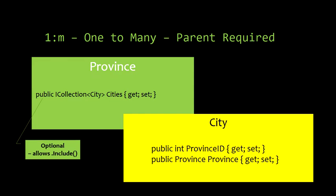That allows us, optionally, to do a .Include. So when we do a LINQ query to pull out all the provinces, we can say .Include city and we get all the cities along with them. That's basically what we've done already - it's just good to review, because you're going to have to create a bunch of classes with one-to-many relationships, so now you know succinctly how to put them together.